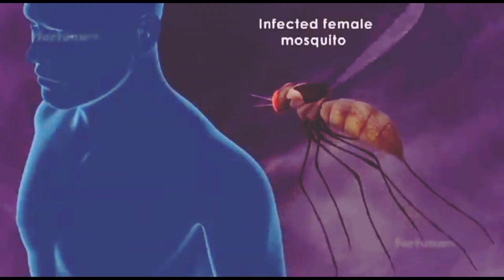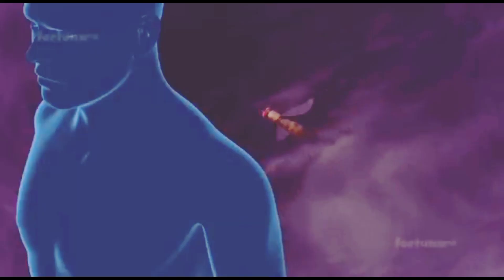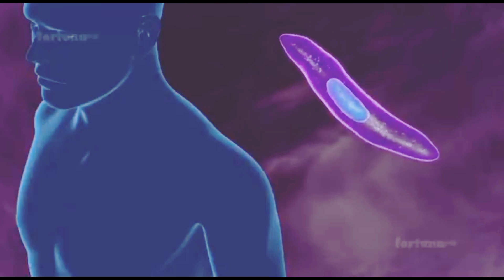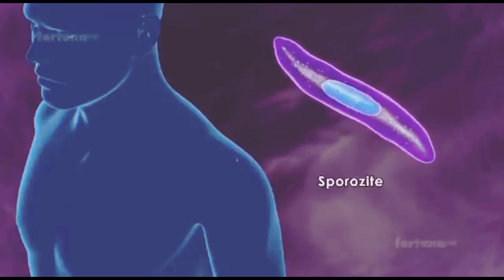Once an infected female mosquito bites a healthy human to feed on blood, immature malarial parasites at the sporozoite stage will enter the human.